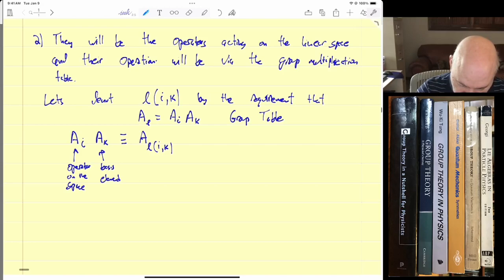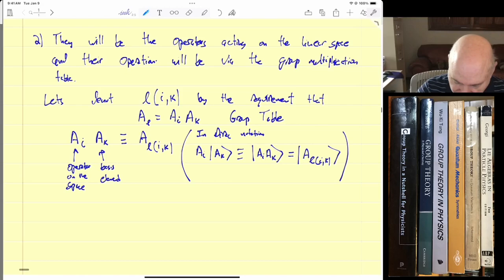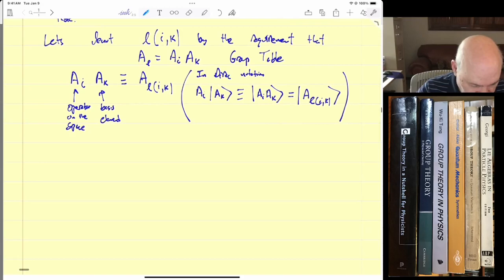That's what I mean by saying that the operators act by the group multiplication law. You simply figure out what A_i A_k is in the group table, and that's the element you get. Now, this is even clearer in Dirac notation. We would write A_i operating on the ket A_k, which would be defined by the ket A_i A_k, which equals A_L(i,k). Here, it's harder to distinguish the operator from the element, and Dirac notation is clear where we are in that sense. So that's why the Dirac notation is a little bit better.